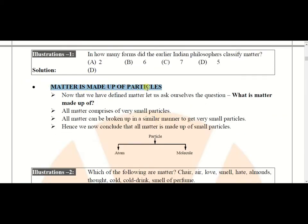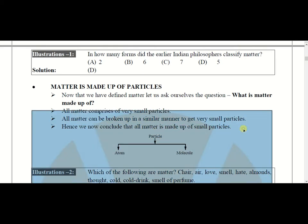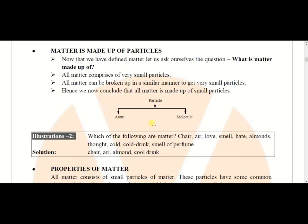Matter is made up of particles. All matter comprises very small particles. All matter can be broken up in similar manners to get very small particles. We conclude that all matter is made up of small particles — particles which we cannot see with our naked eyes. Those particles can be classified as atoms and molecules. Atoms combine to form molecules, and both together are known as particles. The main constituents of matter are atoms and molecules.